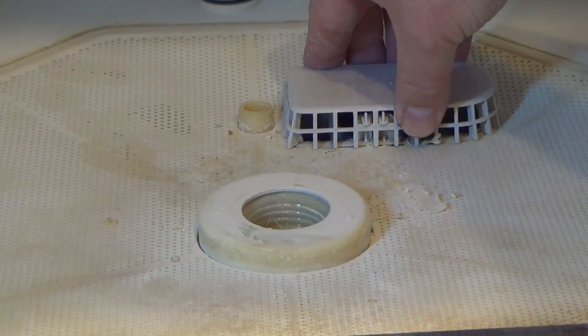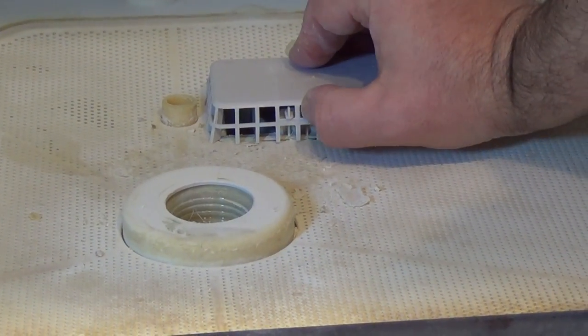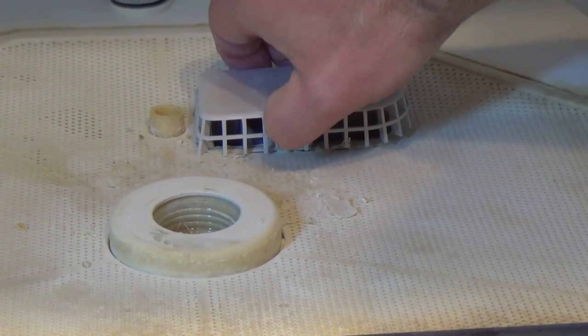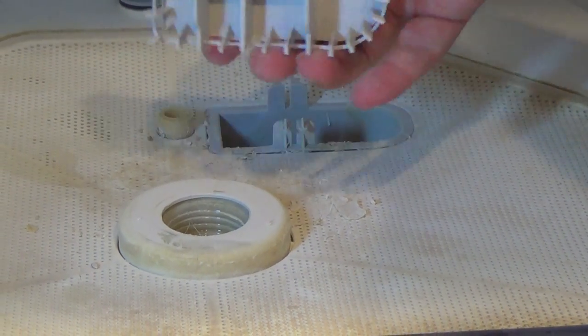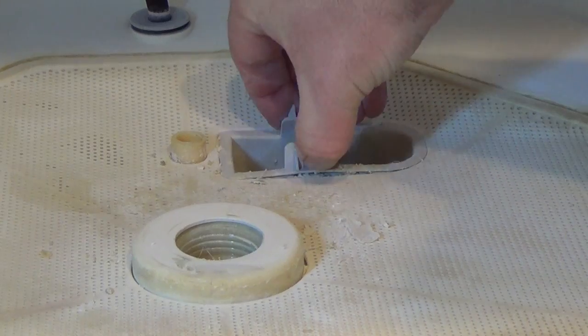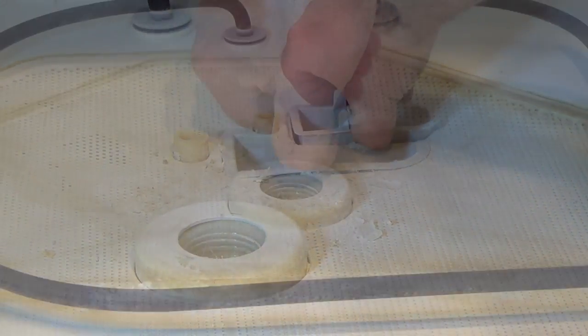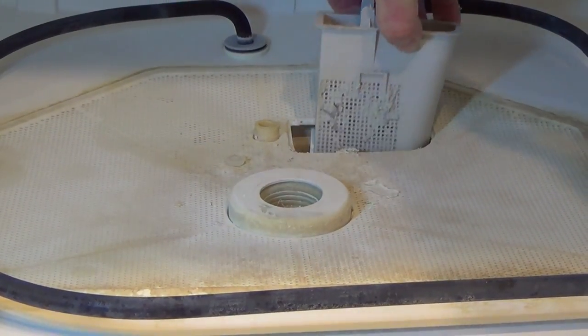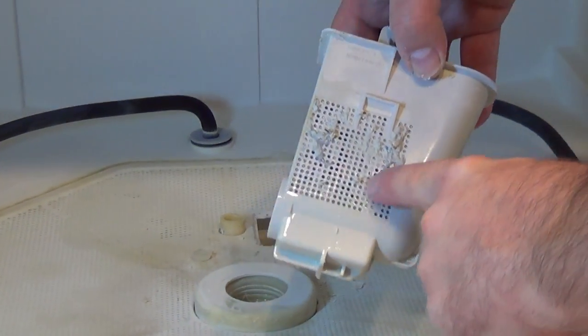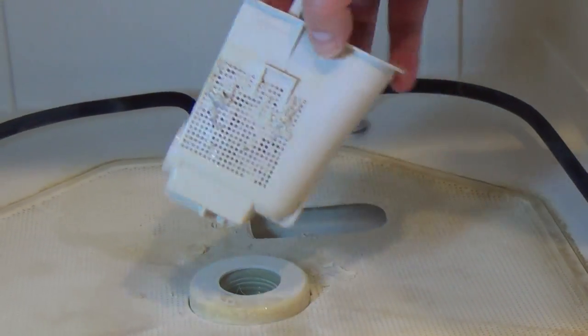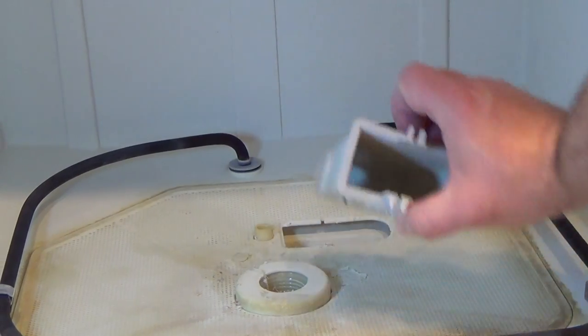This is where the water goes into the pump. Push on these little tabs. When it comes out, then the strainer basket. Then we can pull out this strainer basket. And we want to clean off all this old soap. Dirty.